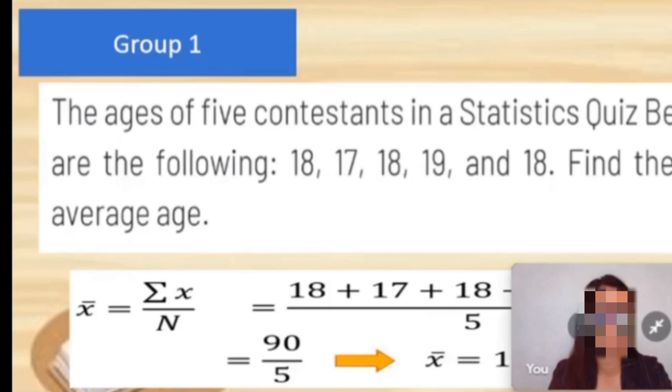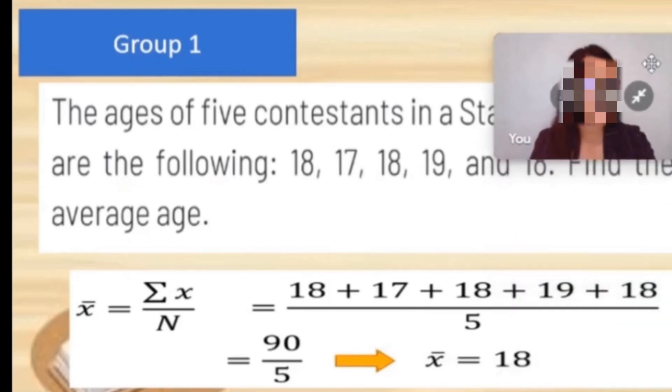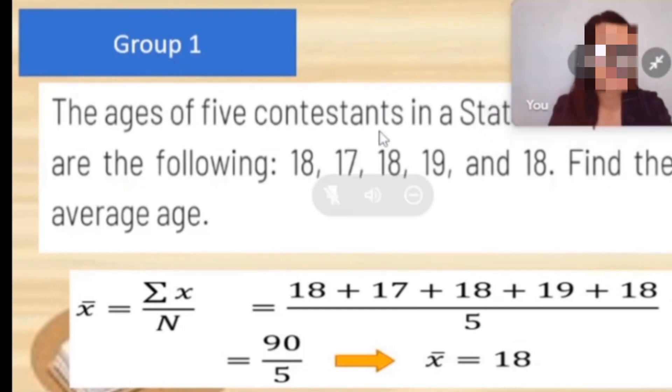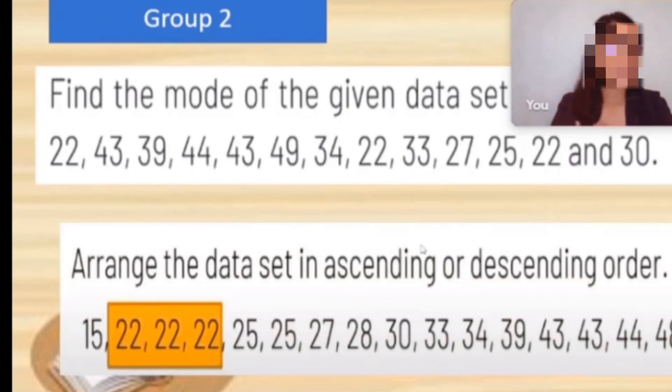The answer of group 1 is 18. The mean of the data is 18. Next, what is the answer of group 2? The answer of group 2 is 22. The mode of the given data is 22.